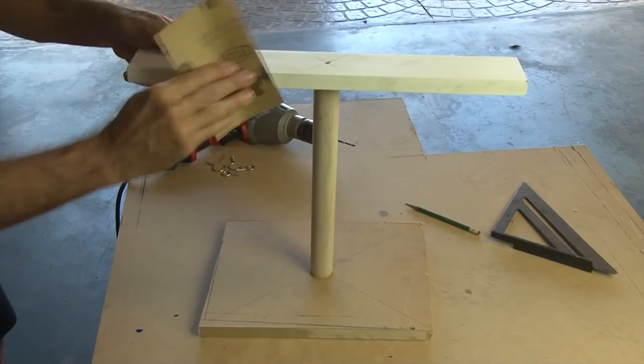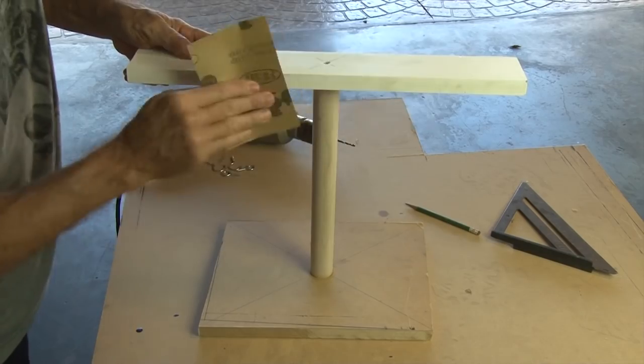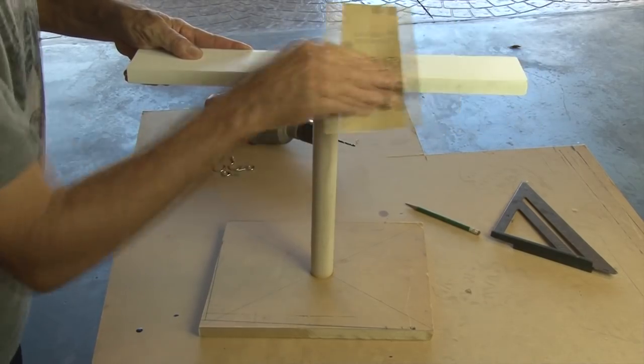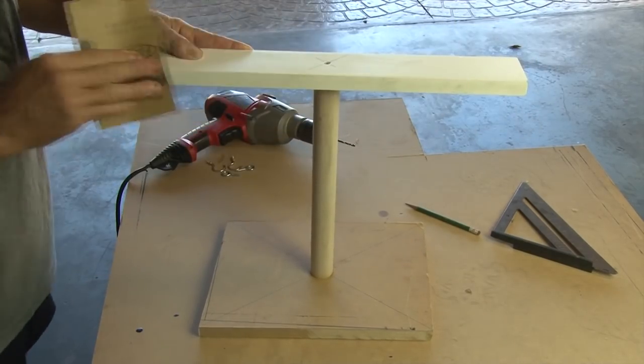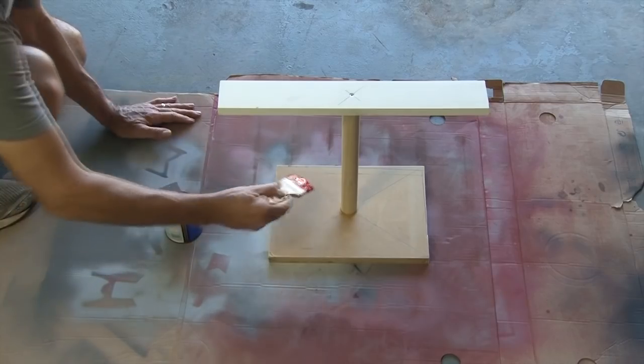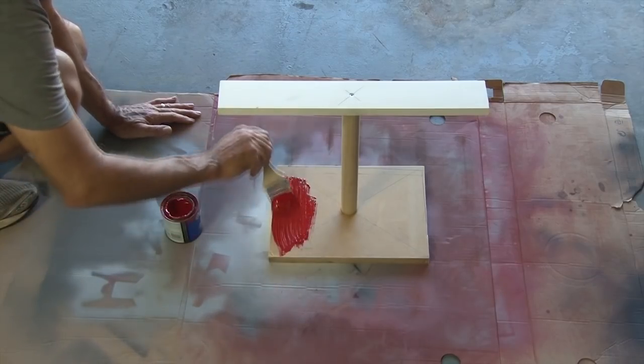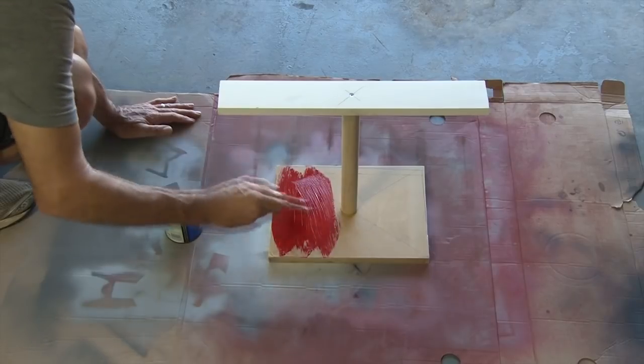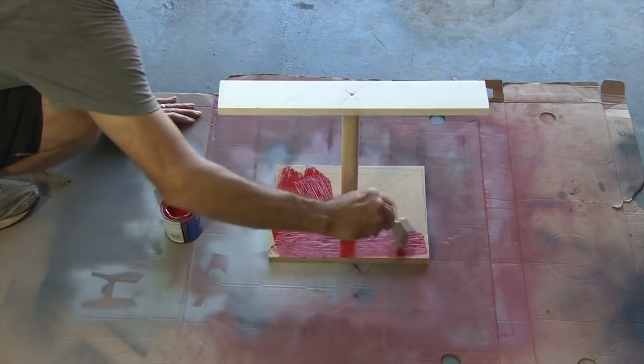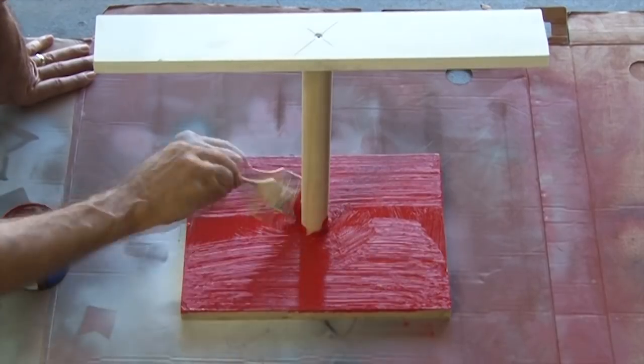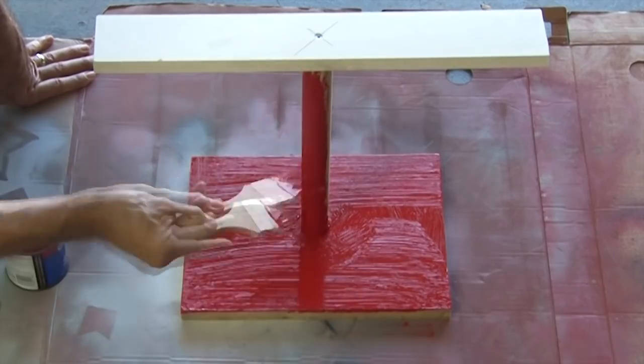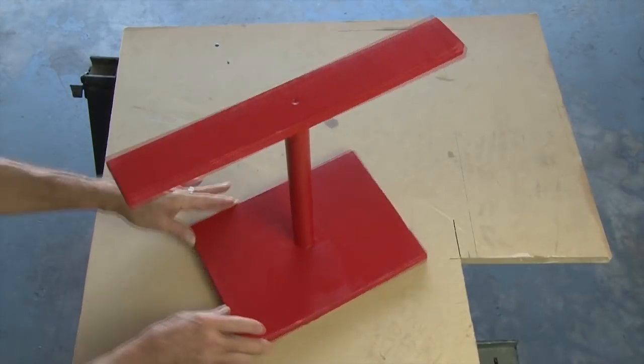Now it's time for some sanding, so we're going to sand our entire hook and ring game. Make sure there's no sharp corners and no splinters. Now it's time to give it some paint, and I had this red enamel in the garage that I thought looked good enough, so using a brush, I'm going to brush the entire hook and ring game and then let it dry thoroughly.